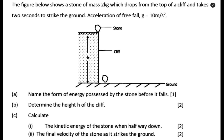Here is the question we are going to start with. A stone of mass 2 kg drops from the top of a cliff and takes two seconds to strike the ground. Acceleration of free fall equals 10 meters per second squared. So we collect the data: mass is 2 kg, time is 2 seconds, and acceleration due to gravity is 10 m/s².